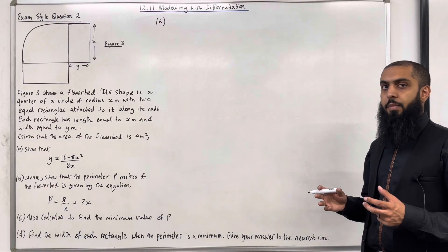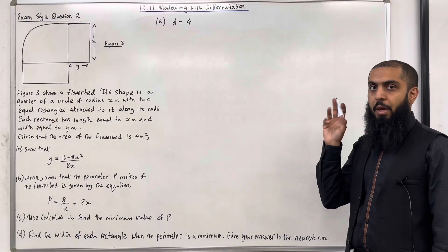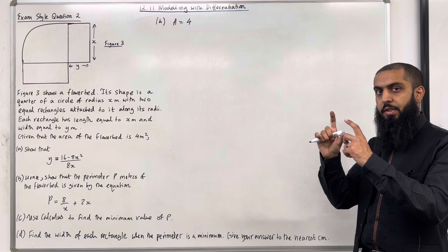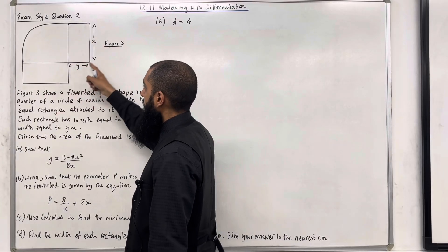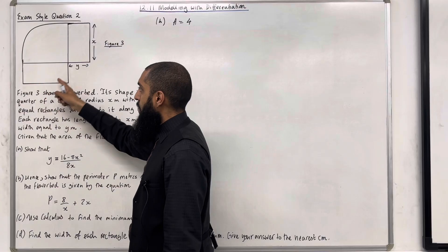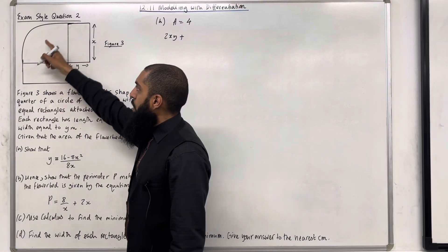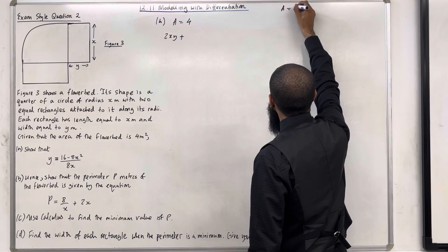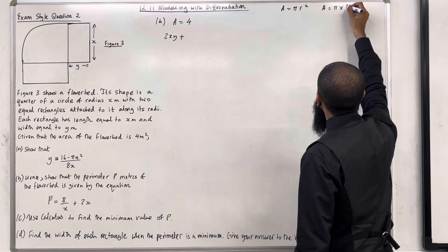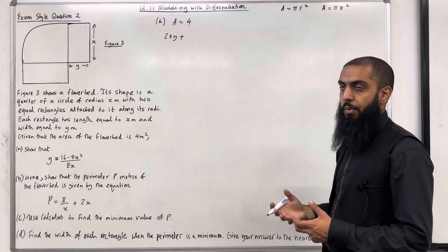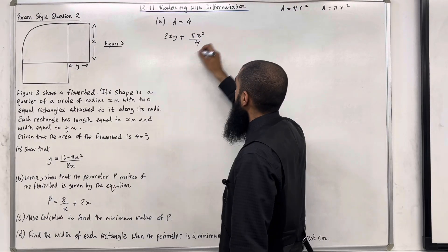Firstly, we are told the area of the flower bed is 4 metres squared, so A equals 4 metres squared. The flower bed is a compound shape made up of two rectangles and a quarter circle joined together. The area of each rectangle is xy, so two rectangles give 2xy. The area of a full circle is pi r squared, so a full circle with radius x has area pi x squared. But we want a quarter of this circle, so that's pi x squared divided by 4. Setting A equal to 4: 2xy plus pi x squared over 4 equals 4.